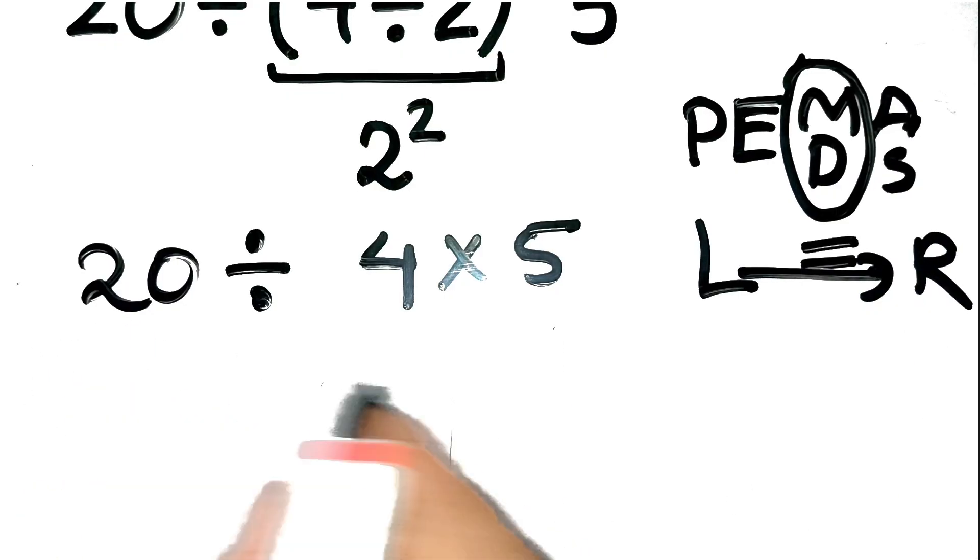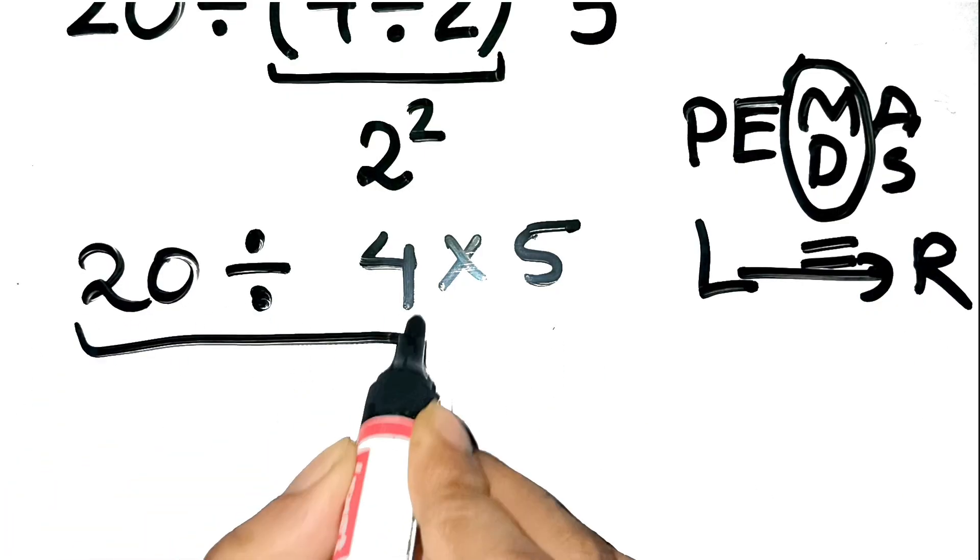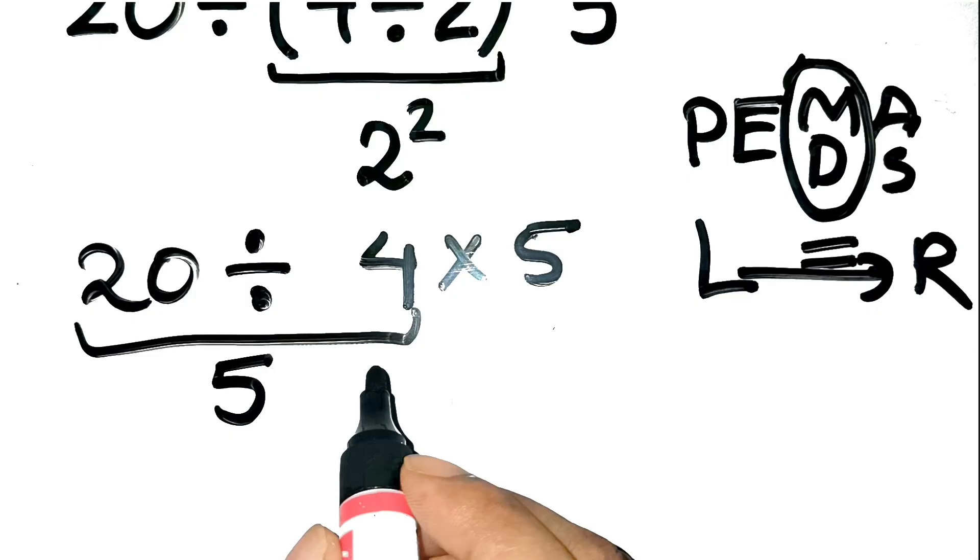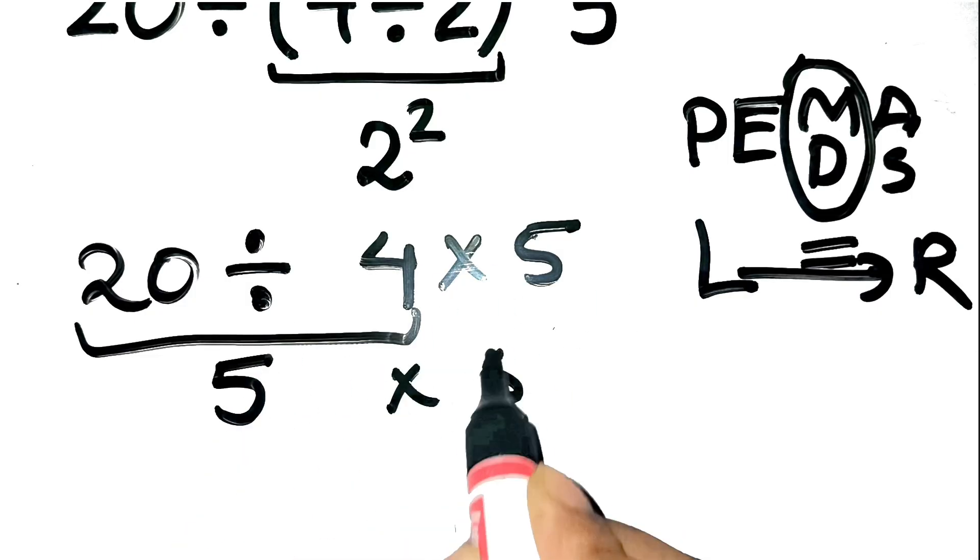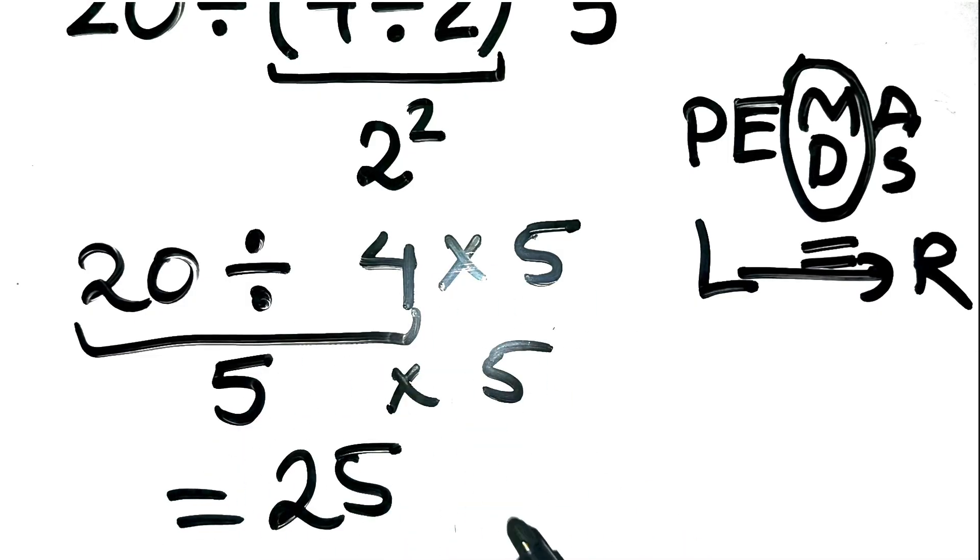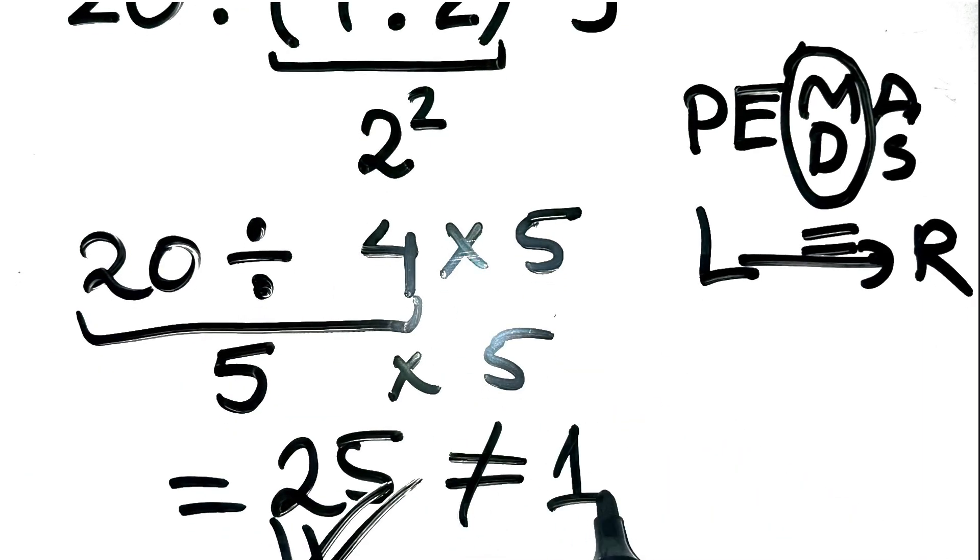So starting from the left, 20 divided by 4 equals 5. Then 5 times 5 equals 25. And that's it. The correct final answer is 25, not 1.